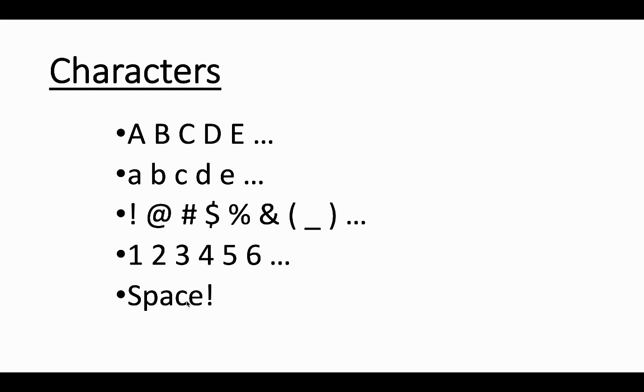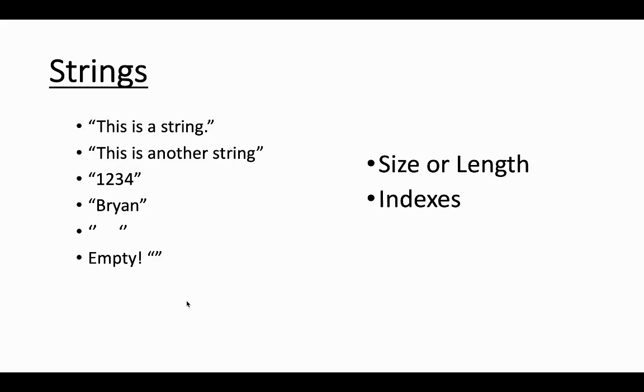So then what's a string? A string is a word or a sentence that contains any number of combinations of characters. Usually in computer programming we use these quotation marks to let us know that we're dealing with a string. For example, this string right here, that's the string one two three four.